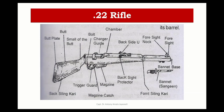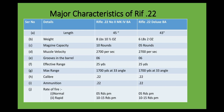Moving on to the different parts of the rifle: the butt, the bolt, the chamber, and the barrel, with the banded base that can also be attached. The major characteristic features of the 0.22 rifle are: weight of about 8 lbs, magazine capacity of 10 rounds or 5 rounds, muzzle velocity of 2700 feet per second, six grooves in the barrel, effective range of 25 yards, maximum range of 1700 yards, and a rate of fire of 5 rounds per minute.